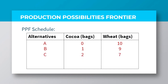Similarly, at C, the country is able to produce two bags of cocoa and seven bags of wheat. Comparing this to alternative A, where 10 bags of wheat was produced, the country is seen to have sacrificed three bags of wheat to be able to produce at C. So, the opportunity cost of producing two bags of cocoa is that three bags of wheat that were sacrificed.